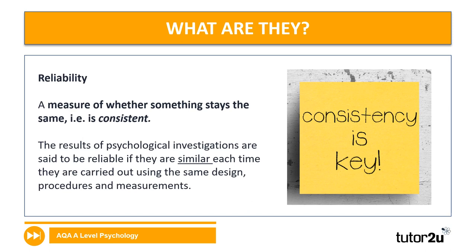Let's start with reliability. I like to think of reliability as one word, and that one word is consistency. So when we're talking about something being reliable, we're talking about it staying the same. When we talk about reliability in the context of psychological research, we're talking about: are the results of a psychological investigation similar every single time we carry it out?